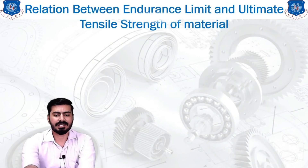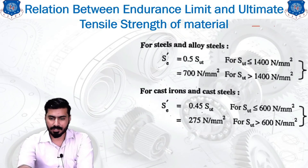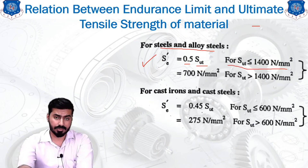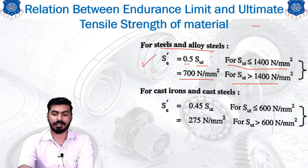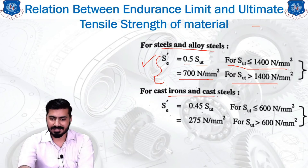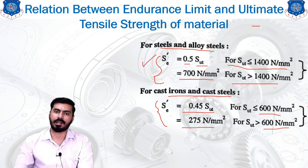Now we look at the relation between the endurance limit and the ultimate tensile strength, which is helpful for calculations. For steel and alloy steels, SE' can be calculated as 0.5 × SUT, provided SUT is less than or equal to 1400 N/mm², and it is 700 N/mm² for SUT greater than 1400 N/mm². For cast iron and cast steels, SE' = 0.45 × SUT, and 275 N/mm² for SUT greater than 600 N/mm². These conditions should be considered while selecting the relation for your examples.